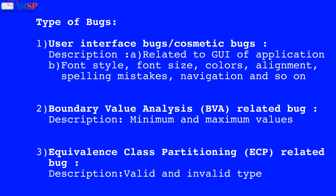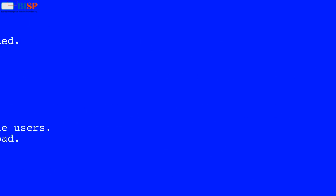2. Boundary value analysis, also known as BVA-related bugs. Description: Minimum and maximum values. 3. Equivalence class partitioning, also known as ECP-related bugs. Description: Valid and invalid type.